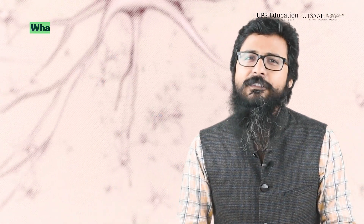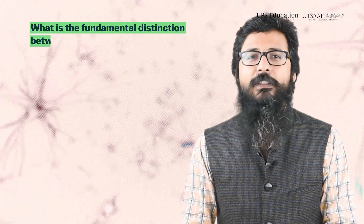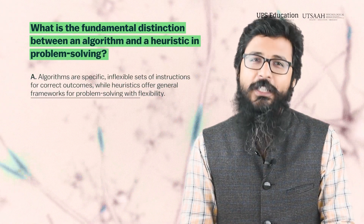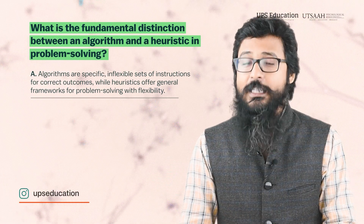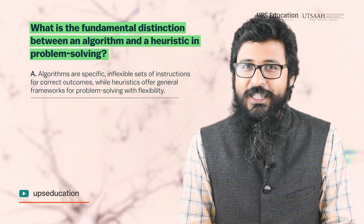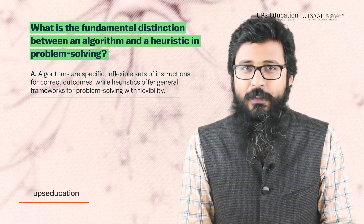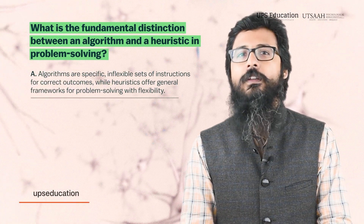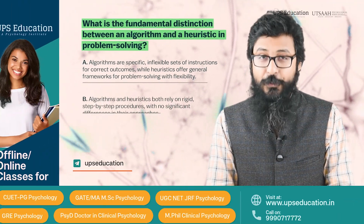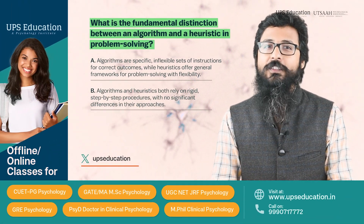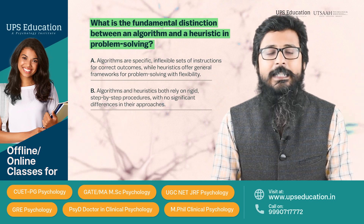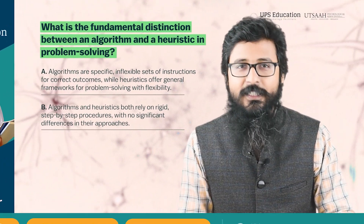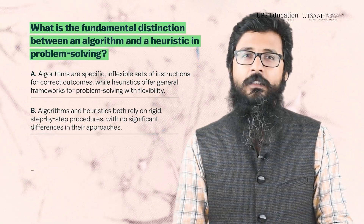Question number two: what is the fundamental distinction between an algorithm and a heuristic in problem solving? Option A: algorithms are a specific, inflexible set of instructions for correct outcomes, while heuristics offer general frameworks for problem solving with flexibility. Option B: algorithms and heuristics both rely on rigid step-by-step procedures with no significant differences in their approaches.